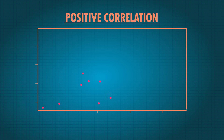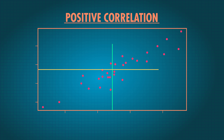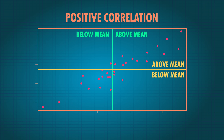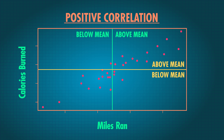If two variables have a positive correlation, they move in the same direction. We can see this in our scatter plot if we draw two lines across the graph — one at the mean of each of our variables — to divide the plot into four quadrants. When two values are positively correlated, like how many miles you run and the number of calories you burn, most of the points will be in the upper right and lower left quadrants, where the values for miles and calories burned are either both large or both small.